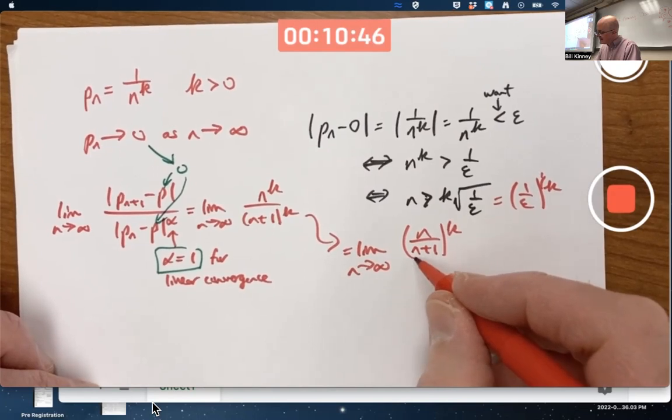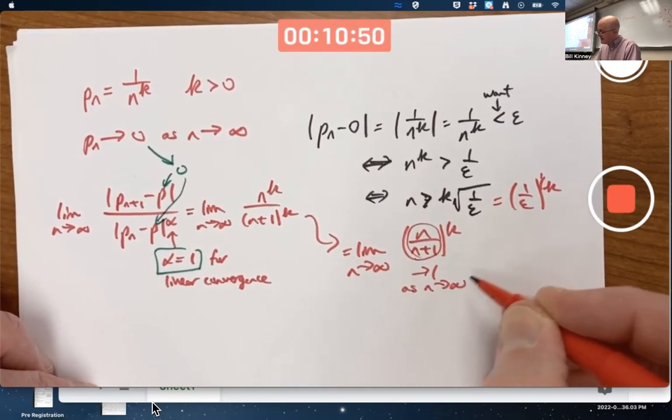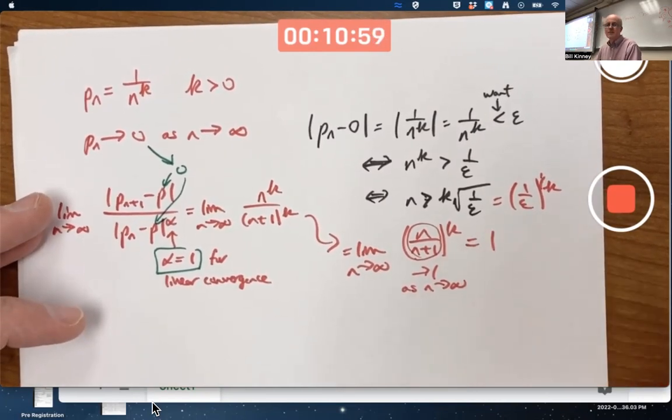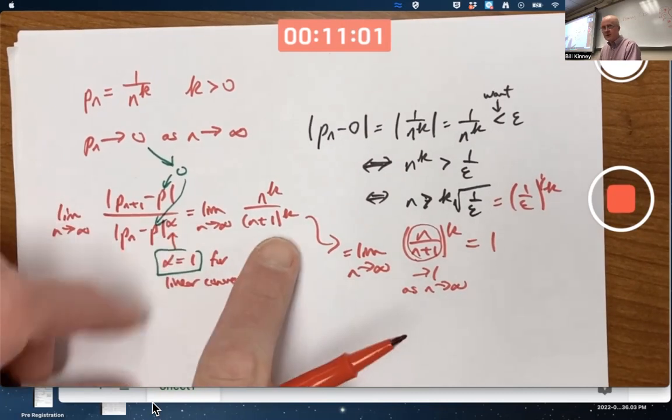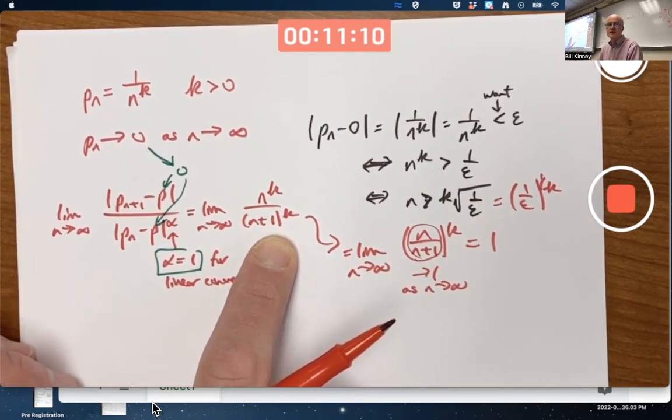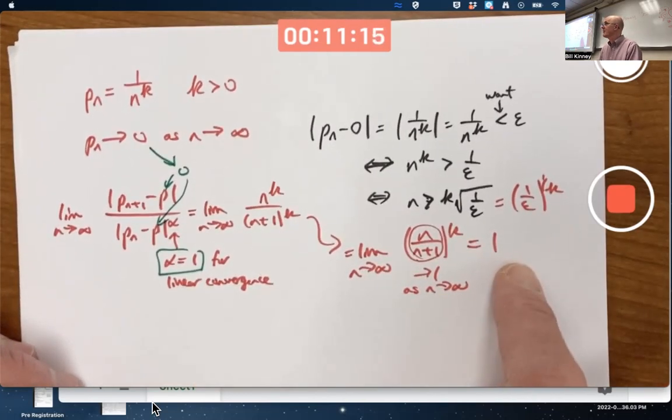You can think of it like this if you want. This thing inside the parentheses goes to 1 as n goes to infinity. k is a positive number. Something going to 1 raised to a constant power is still going to go to 1. This limit is going to be 1. You also could think of it as, if k is an integer, at least a rational function of n here, where the degree of the top and the bottom are the same. And so you'd look at the coefficients of those highest powers. Point is, the limit is 1. 1 is a positive number.